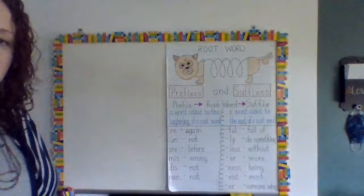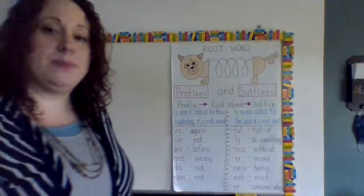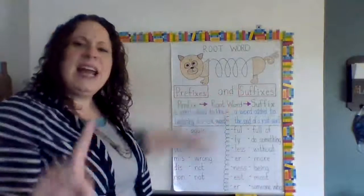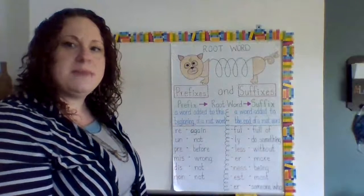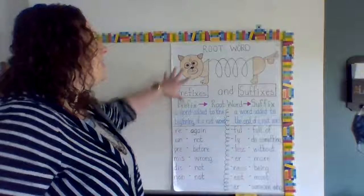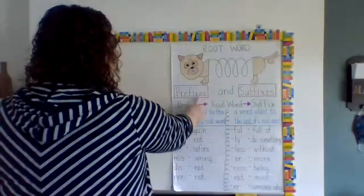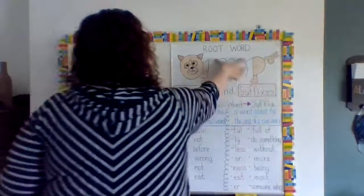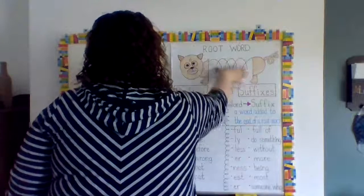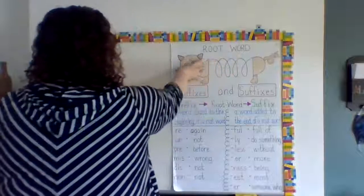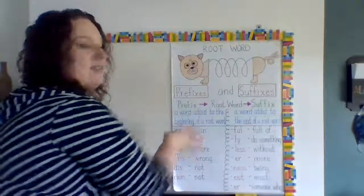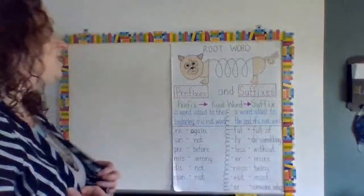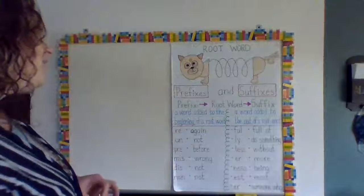I used this example for third grade — I thought it was a neat way to display prefixes. We're not really going to be talking about suffixes, but a prefix is a word added to the beginning of a root word, and a suffix is added to the end. In this example, the little guy's belly or spring is the root word, his head comes before his body — that's the prefix — and the suffix comes at the end, at his tail end.